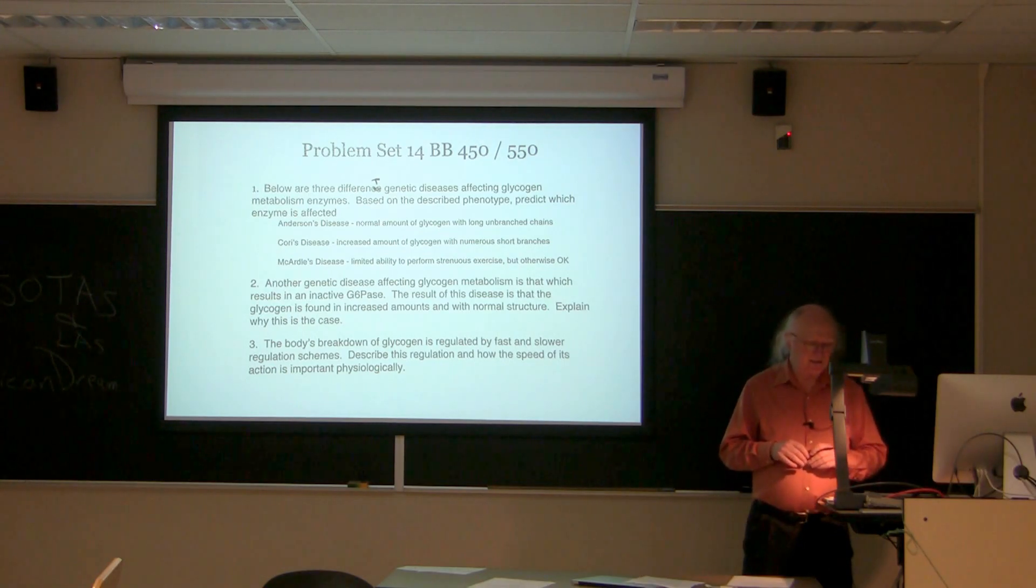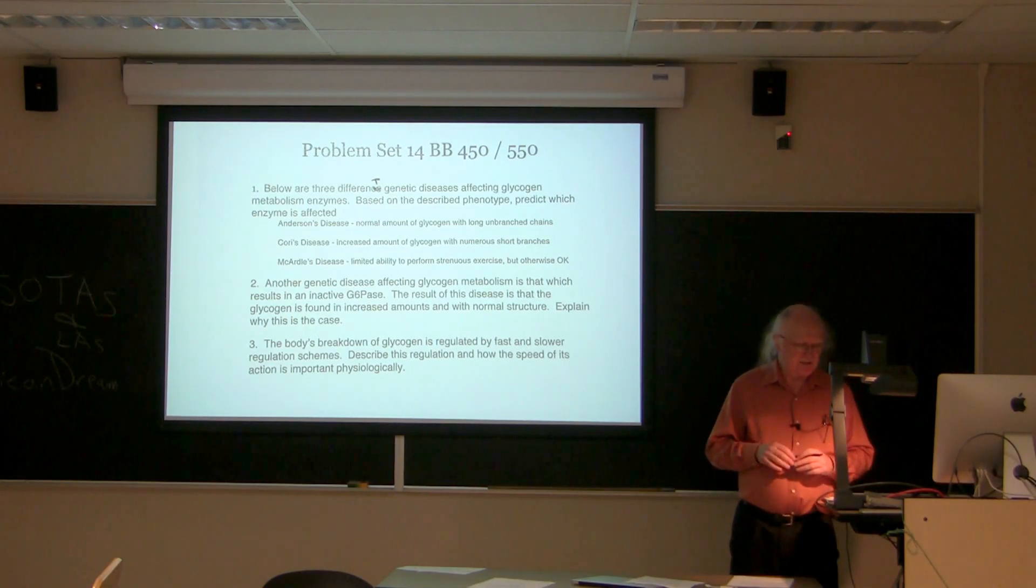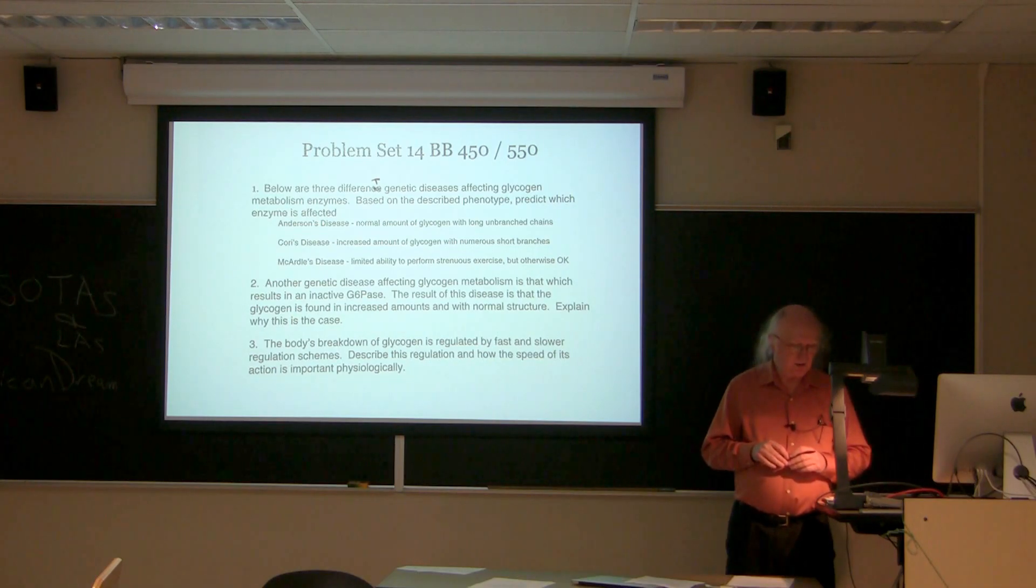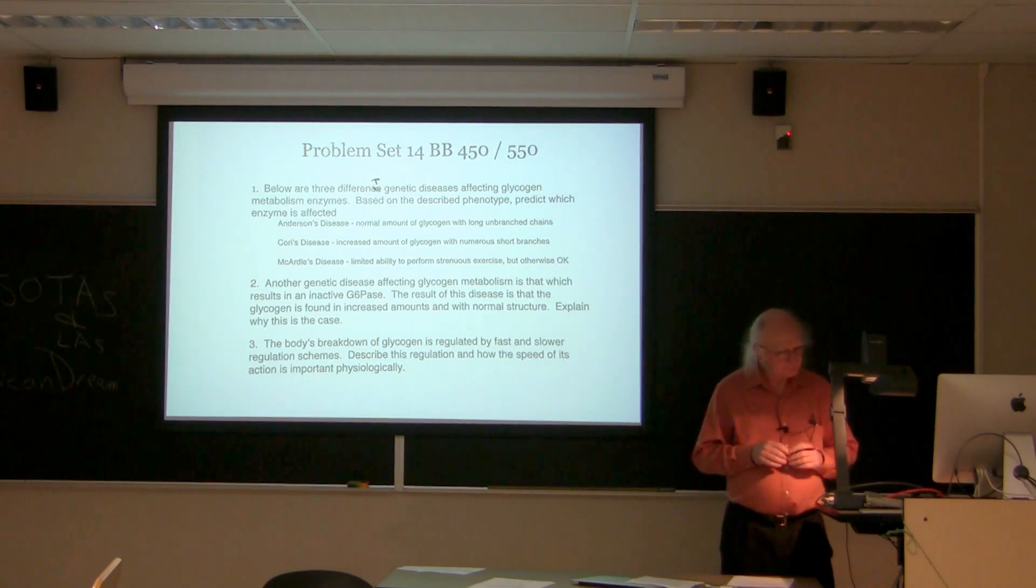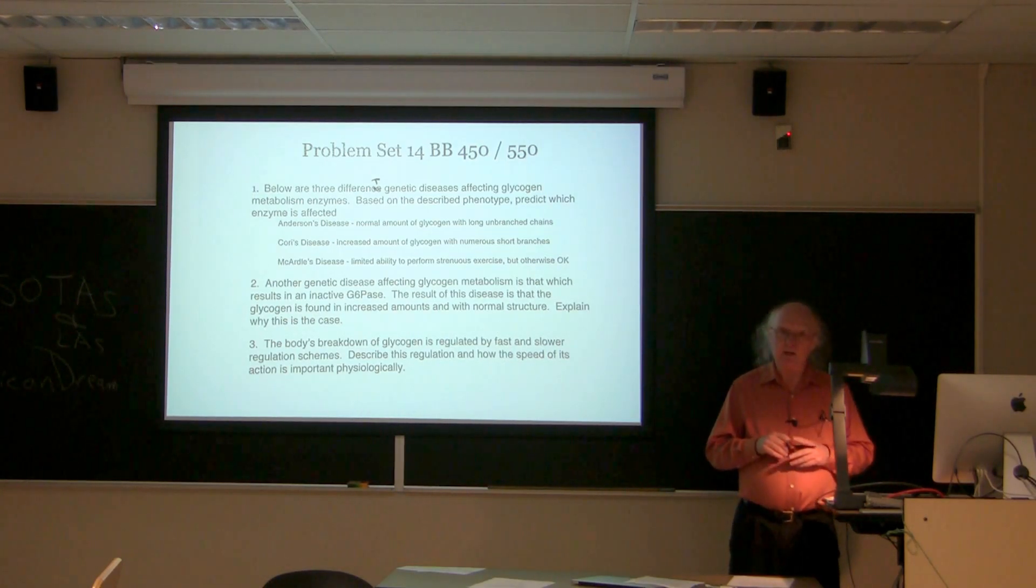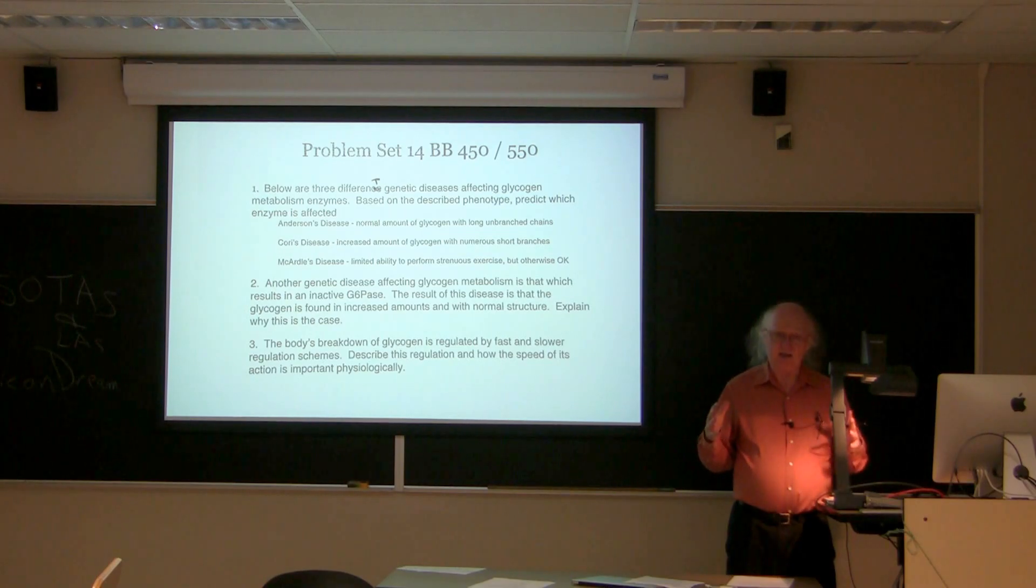The second disease is Corey's disease. And it says that people with this disease have an increased amount of glycogen, but it has numerous short chains. And so here's also a clue to what's going on. Corey's disease, the fact that it has numerous short chains, suggests to us that this glycogen, the cell is unable to completely break down.